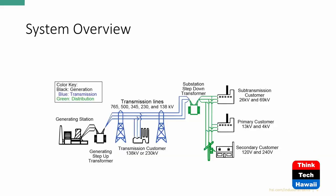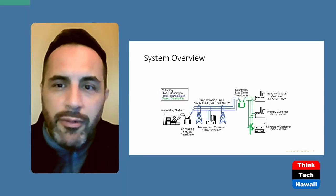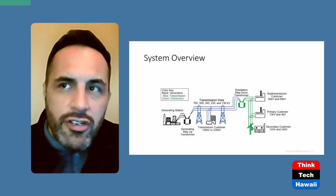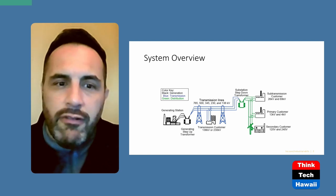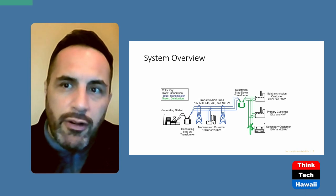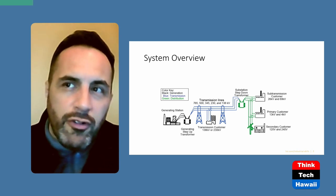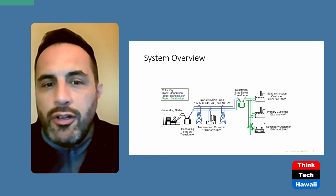This is an example of how a system generally works. You have a generation station on the left in black, then a step-up transformer. In blue is your transmission system — the high-voltage power lines that everybody complains about, the typical NIMBY problems. They take up a lot of space and real estate, but you need them. They're a vital part of the grid. You need them to move power from several interconnected power plants over to where the load is.